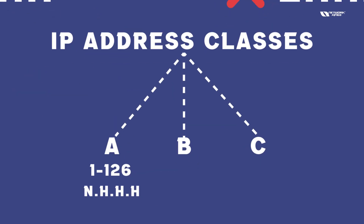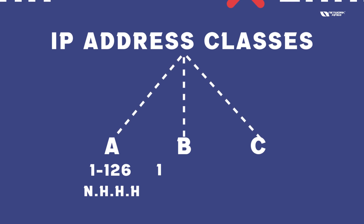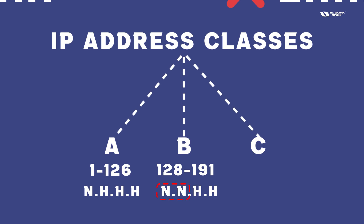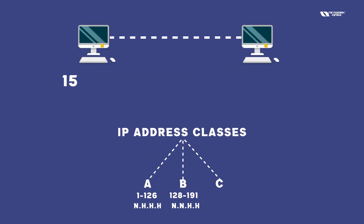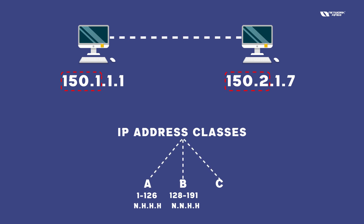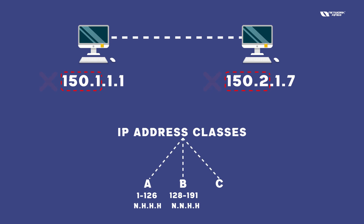In Class B, when the IP address is between 128 and 191, we need to match two parts. So when we have IP 150.1.1.1 and here 150.2.1.7, check the first two parts — they are not matching. So the network bits are not matching, meaning they are not in the same network.